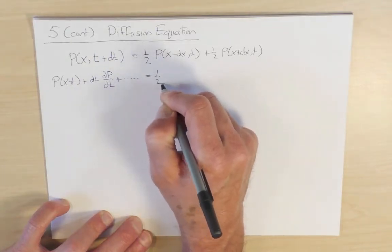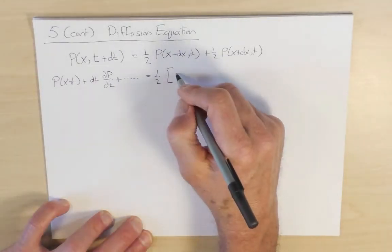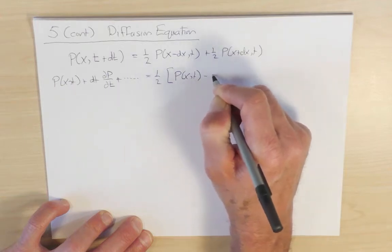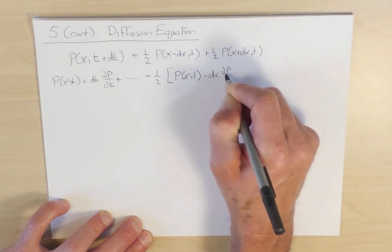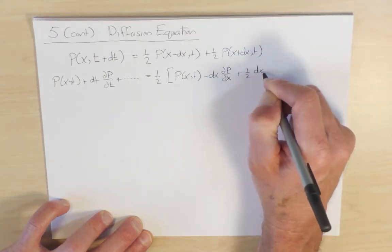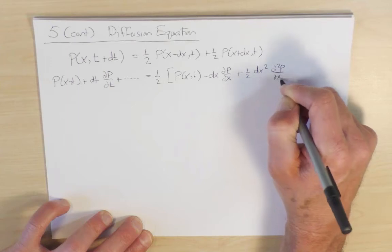and the x minus dx term, when we expand it in a Taylor series, will be p(x,t) minus dx dp/dx, plus one-half dx squared, d²p/dx², plus higher order terms.